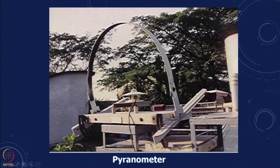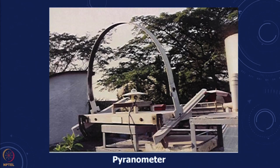You also have what is known as a pyranometer, and the pyranometer can be used for measuring diffused radiation or total insolation. There is a blocking sheet which can be used to block the direct, and then what is measured becomes only the diffused. If we remove this, we get the total insolation on a horizontal surface — the global horizontal insolation. So the direct plus diffused gives us the horizontal insolation.